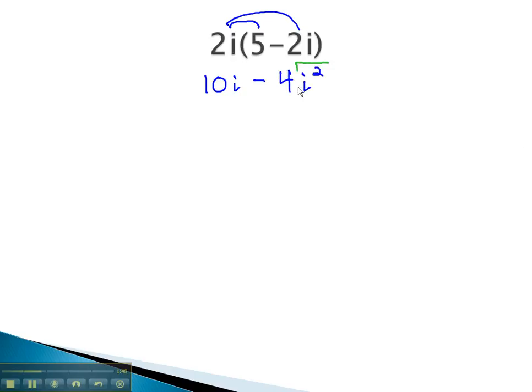Again, we see an i squared, and we know that i squared is really a factor of negative 1. What this really says is we're multiplying negative 4 times negative 1. So we have 10i plus 4.